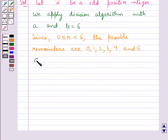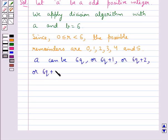That is, a can be 6q or 6q plus 1 or 6q plus 2 or 6q plus 3 or 6q plus 4 or 6q plus 5 where q is the quotient.